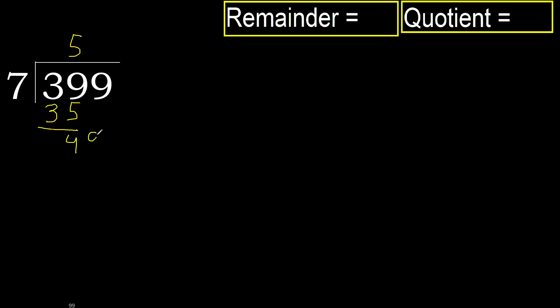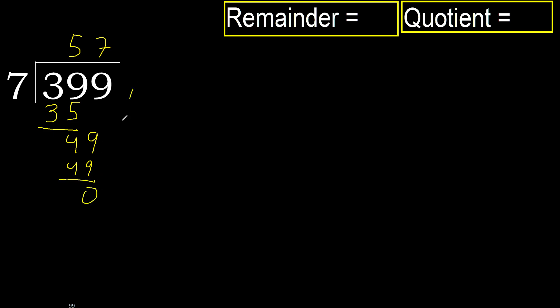Next, bring down 9: 49. 7 multiplied by 7 is 49. Subtract.